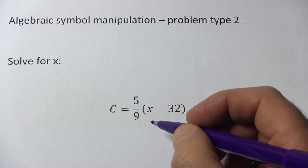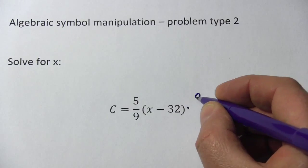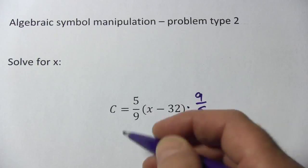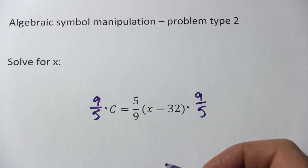And the way I'm going to do that is to multiply by the reciprocal, so this side gets multiplied by 9 fifths. Of course, if we do that on this side, we have to do it on this side, so we'll multiply this side by 9 fifths as well.